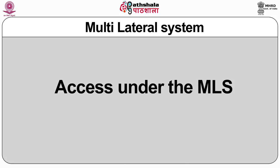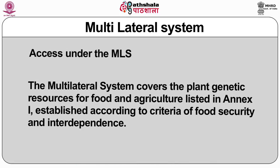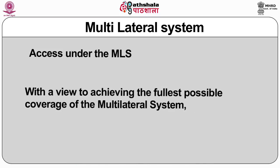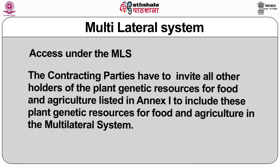The question of access under this multilateral system: the multilateral system covers the plant genetic resources for food and agriculture listed in Annex I to the treaty, established according to criteria of food security and interdependence. The multilateral system includes all plant genetic resources for food and agriculture listed in Annex I that are under the management and control of the contracting parties and in the public domain. With a view to achieving the fullest possible coverage, the contracting parties have to invite all other holders of the plant genetic resources listed in Annex I to include these resources in the multilateral system.